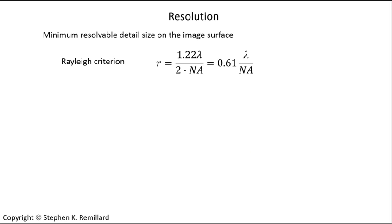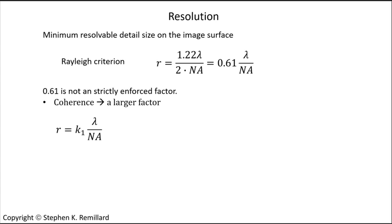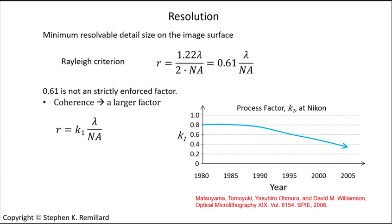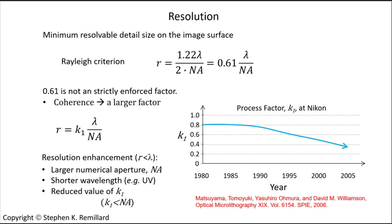The Rayleigh criterion would have that the smallest resolvable detail on the image is 0.61 times the wavelength divided by the image-side numerical aperture. But there's no law of physics dictating what resolution actually is, and considerable effort has been devoted to engineering systems that tolerate a smaller factor in front of the ratio of lambda over numerical aperture. The K1 process factor, as it's called, is a collection of everything else that can be done in the lithography process to enhance resolution.